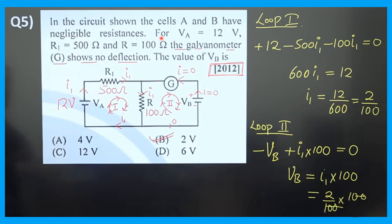In the circuit shown, cells AB have negligible resistance. VA equals 12 volt, R1 equals 500 ohm, R equals 100 ohm. The galvanometer G shows no deflection. Find the value of VB. We consider two loops. I consider the clockwise direction for convenience.